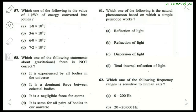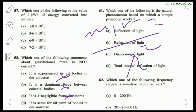Question 58: Which statement about gravitational force is not correct? 'It is experienced by all bodies in the universe' — correct. 'It is the dominant force between celestial bodies' — correct. 'It is negligible for atoms' — also correct. 'It is the same for all pairs of bodies in the universe' — this is wrong, because gravitational force depends on individual masses and inversely on the square of the distance between them. So different pairs have different gravitational forces. The answer is D.